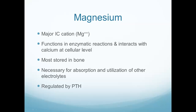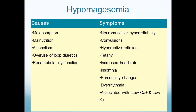Magnesium is an electrolyte that is very important for proper functioning of the heart. It's a major intracellular cation and it's necessary for the absorption and utilization of other electrolytes. Causes of a low magnesium level include malnutrition and malabsorption — we're not getting it in the diet, it's not being absorbed or utilized. Magnesium acts as a relaxant on the body, so without it the body becomes hyperactive: hyperactive reflexes, convulsions, neuromuscular irritability, possibly dysrhythmias, and cardiac dysfunction.